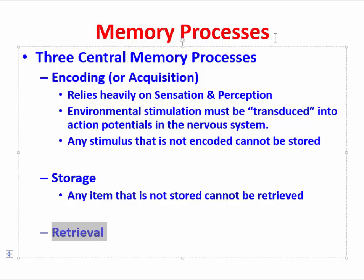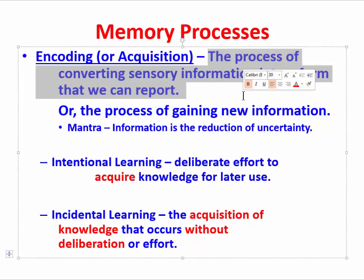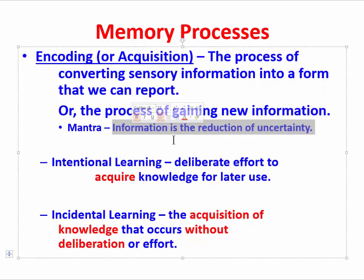Now that we've introduced the three central memory processes, let's elaborate on each. Encoding, which we said is also acquisition, might be defined as the process of converting sensory information into a form that we can report, or alternatively, the process of gaining new information. This brings up the word information, which brings us back to a mantra we've had previously. Let's remind ourselves: information is the reduction of uncertainty.